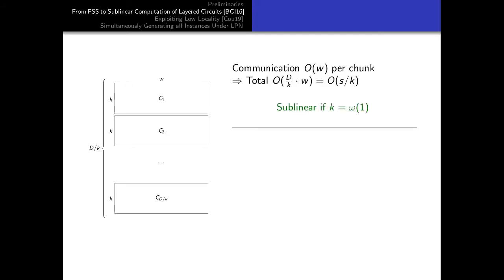This is how we use the assumption that the circuit is layered. First, you divide the layered circuit into chunks of K consecutive layers and apply such a low-complexity protocol to each chunk. If you do so, you obtain a secure computation protocol whose total communication is S — the circuit size — divided by K. So if K can be super-constant, we've won and we have the protocol we need.